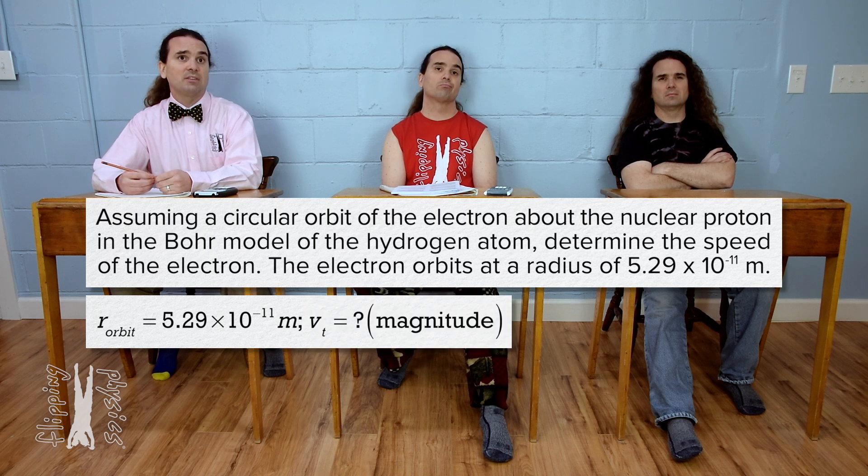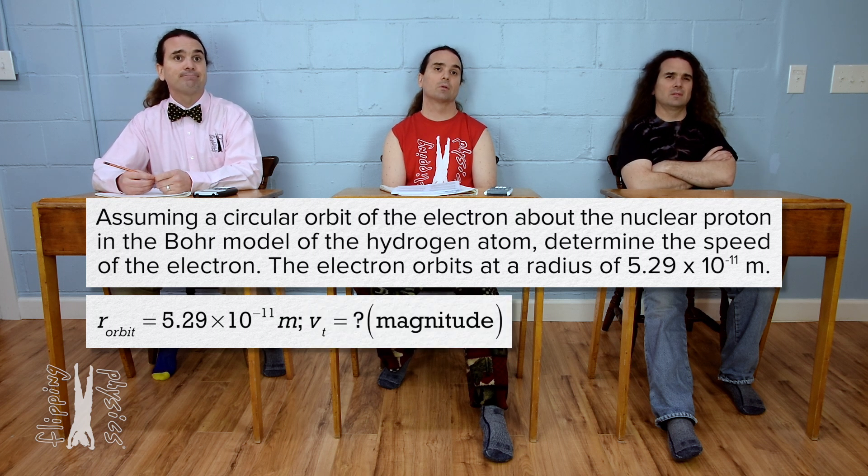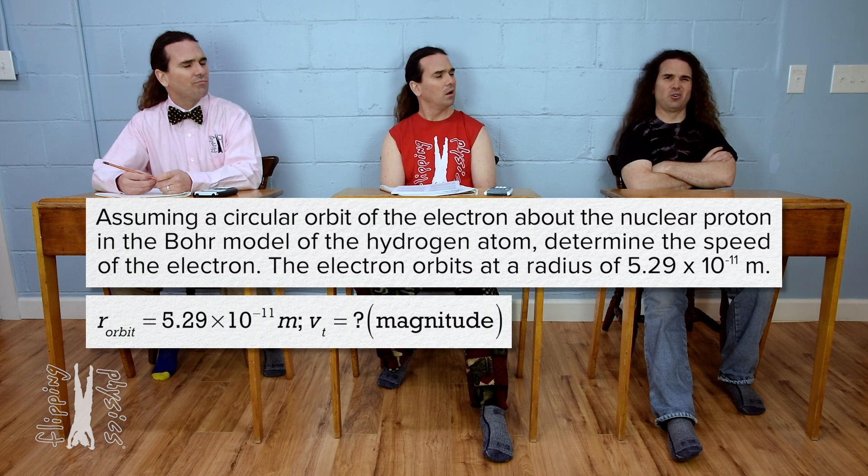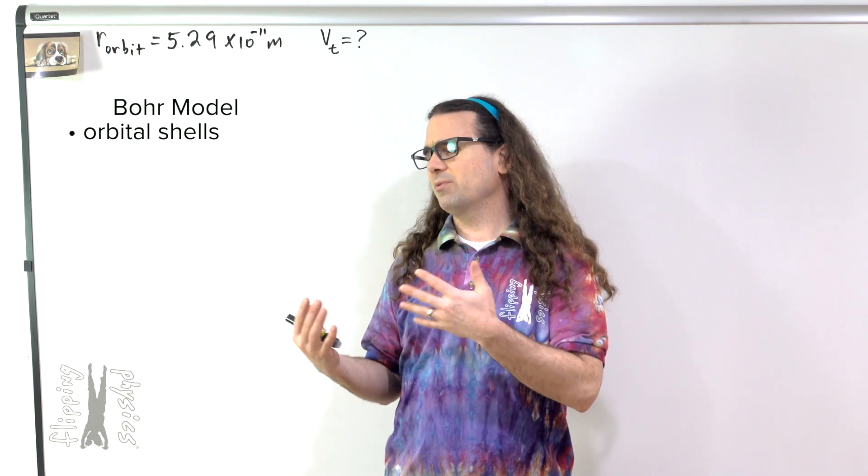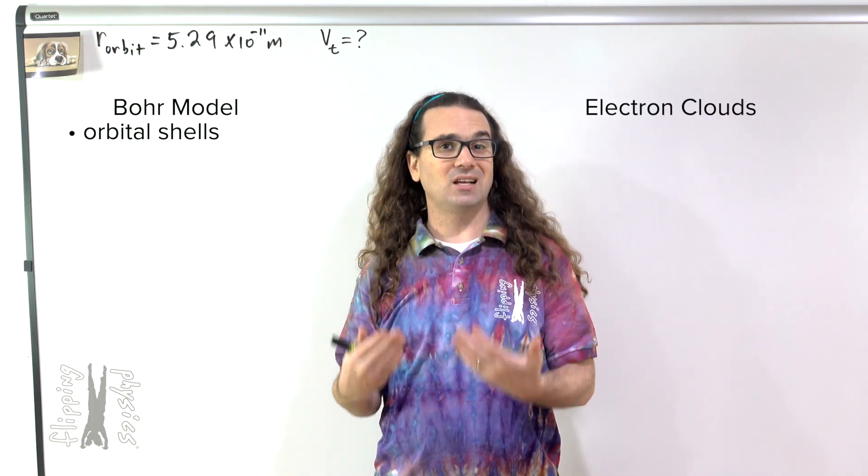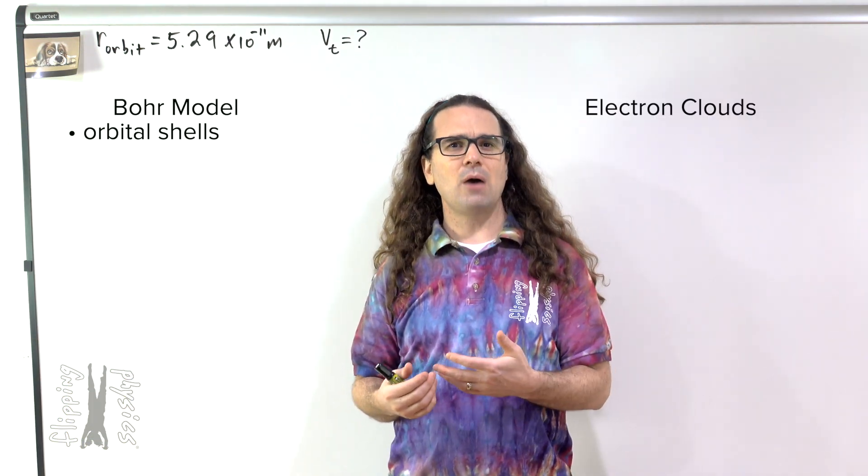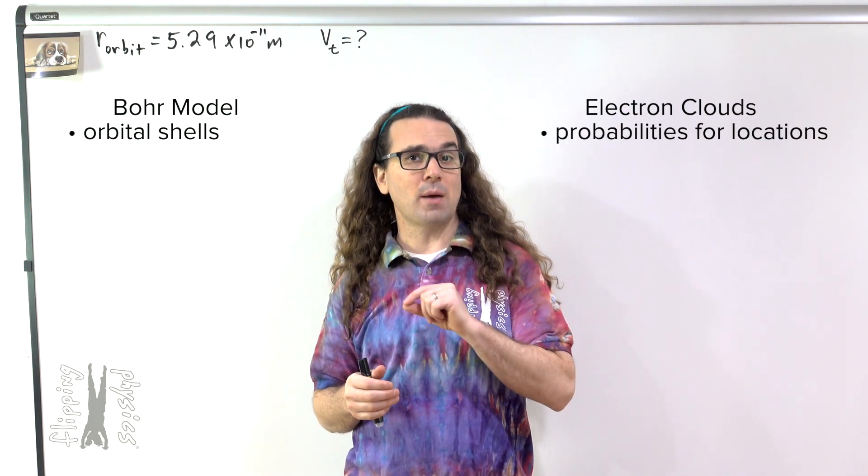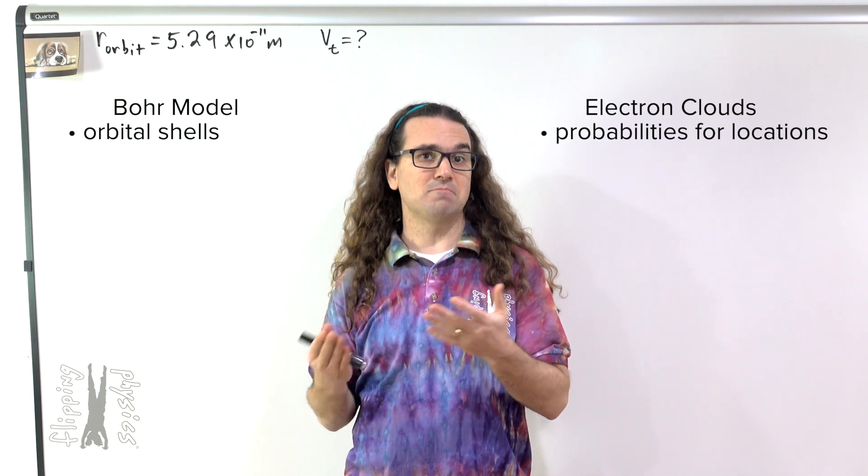Bobby, aren't electrons in like clouds or something around the nucleus of the atom and not really orbits? Bo, with regards to the electron clouds, they describe how we do not actually know the positions of the electrons in atoms. However, we know probabilities for where the electrons might be. Basically, we can make educated guesses for electron locations.